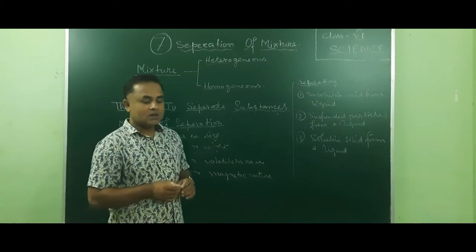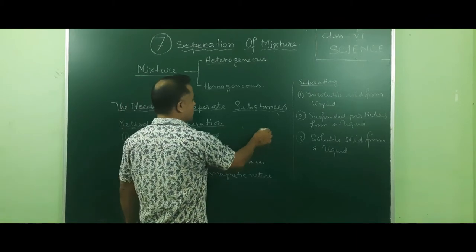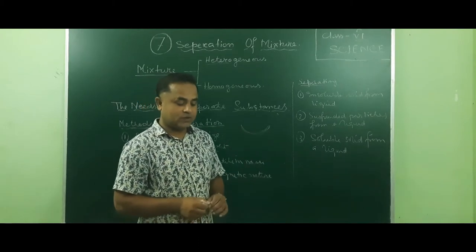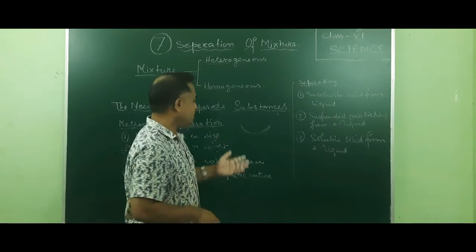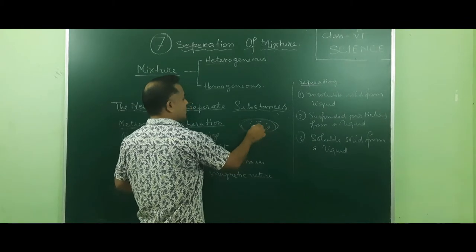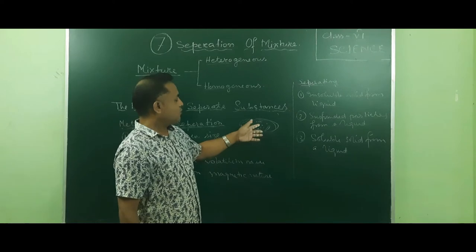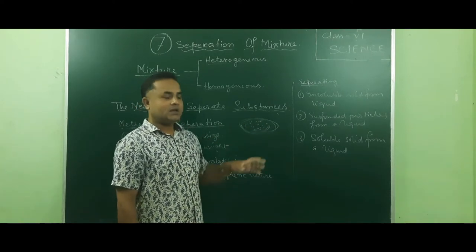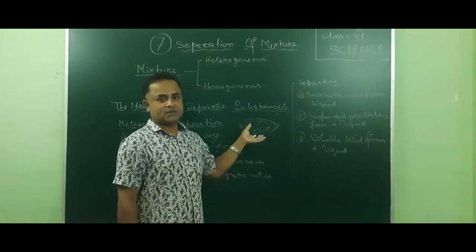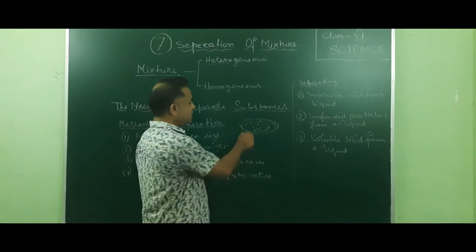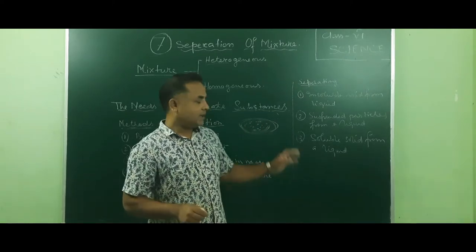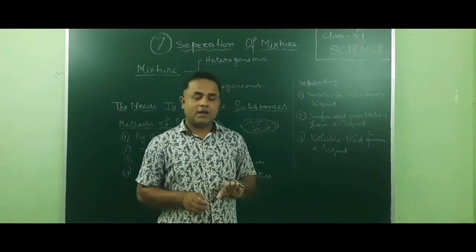First method: by difference in size. When the mixture is of different sizes, what we do is hand-picking. For example, suppose we bought chana from the bazaar. In the chana or dal, there are many unwanted substances which may be bigger or smaller in size. So what we do is take out one by one — we select and take out the unwanted components. This process is called hand-picking.